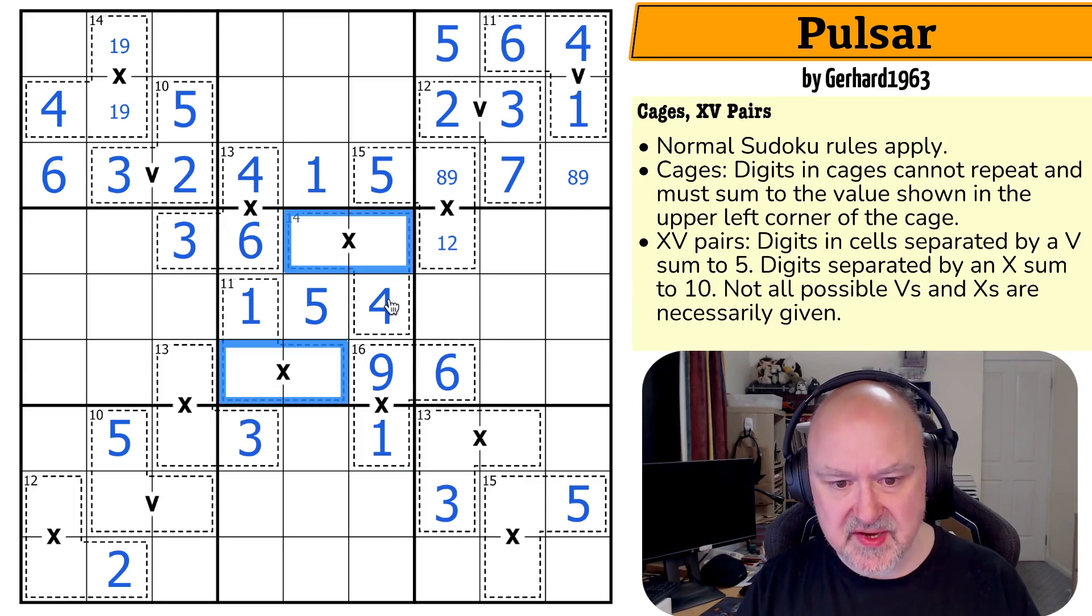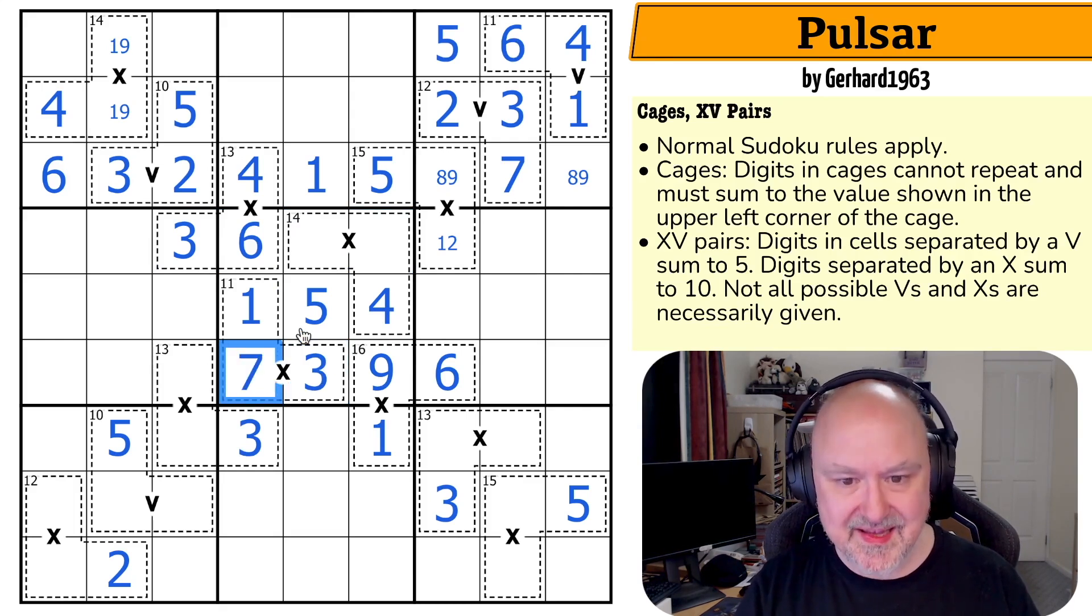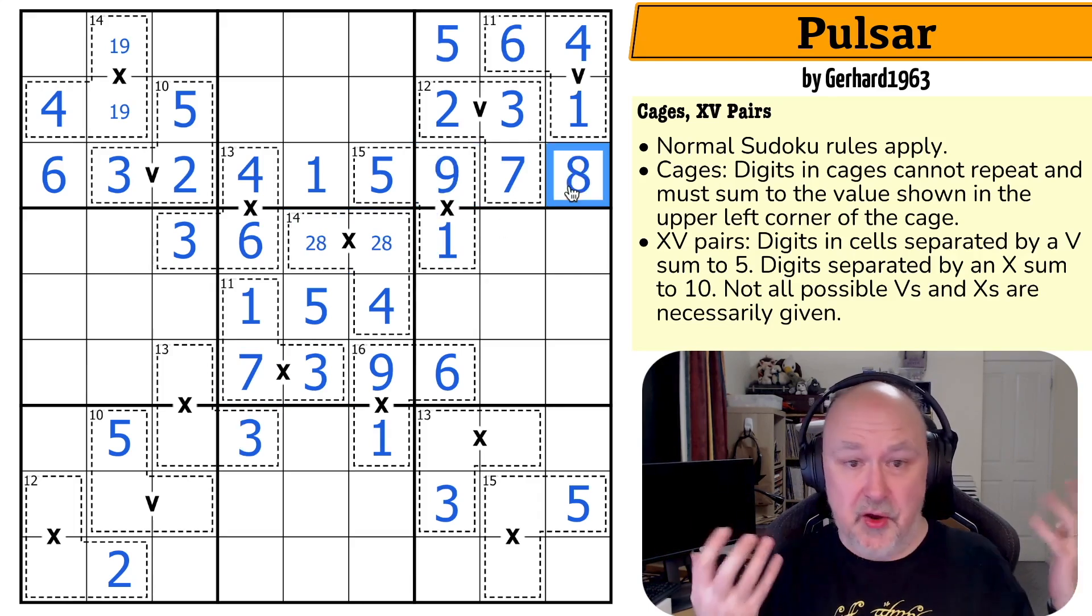This has to be the nine going with a one. So these are two-eight and three-seven. This can't be the three-seven because of that three. In fact, where does three go in this box? That's the three because by Sudoku making that the seven. And this becomes a two-eight, which makes that the one, which makes that the nine, which makes that the eight.